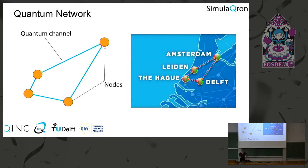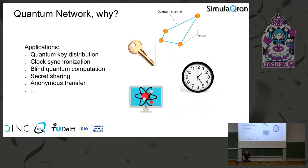You might ask: why do we want to build a quantum network? There are a lot of applications for a quantum network that you can't do on a classical network. The most famous is quantum key distribution, which lets you generate a key for secure communication. But there are many others: better synchronization of clocks, extending the baseline of telescopes, blind quantum computation, secret sharing, anonymous transfer, and more.